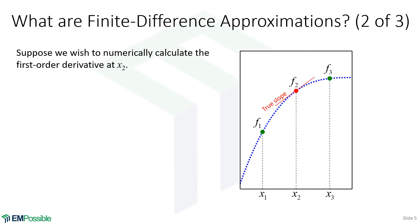Let's think about what the first-order derivative is. Let's say we want to calculate the first derivative at the second point. The first derivative is slope. So if we draw a tangent to the actual function, this is the true slope — this is what we want to get. But of course, we can't know this directly. We have to somehow estimate it.